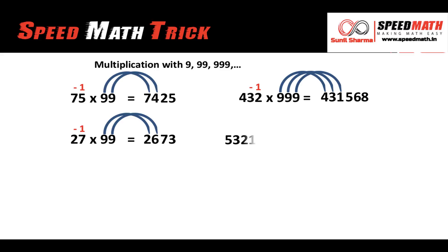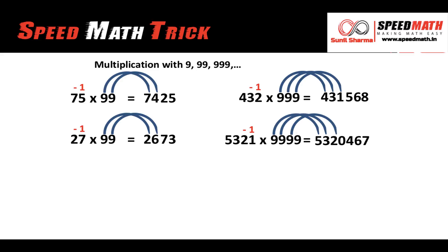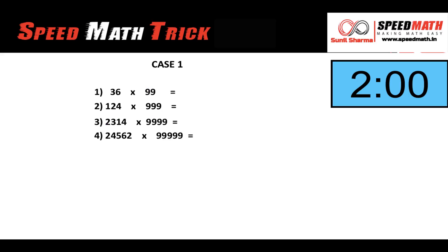One more example: 5321 multiplied by 9999. There are four nines and four digits in 5321. Step 1: subtract 1 to get 5320. Step 2: subtract 5320 from 9999 — 9 minus 5 is 4, 9 minus 3 is 6, 9 minus 2 is 7, and 9 minus 0 is 9. The answer is 53204679.